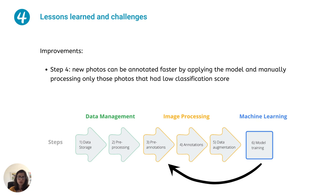Manual annotation of images in step four was identified as an important challenge where expert knowledge was crucial for correctly identifying fish species. A possible improvement to this step, as we add more species to the model, is to apply the trained model from step six to new images and then manually process only those images that had a low classification score, making this process interactive.